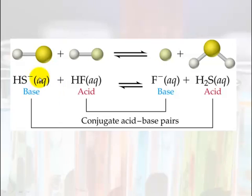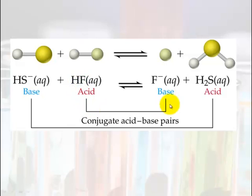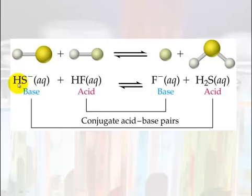Here's another example: hydrogen sulfide is acting as the base, and hydrogen fluoride is the acid. Hydrogen fluoride will donate its hydrogen to hydrogen sulfide. The conjugate base of this acid is just the fluoride ion (F⁻) — it has lost the hydrogen. The conjugate acid is H₂S⁺, which has an extra hydrogen compared to its original base. Again, the difference between the base and the conjugate acid is the addition of one hydrogen, and the difference between the acid and the conjugate base is the loss of one hydrogen ion.